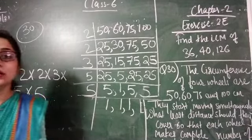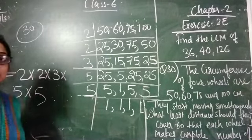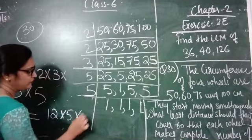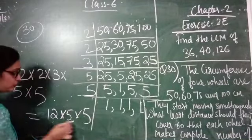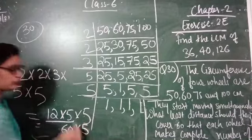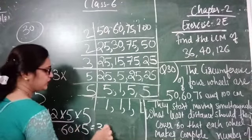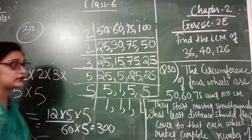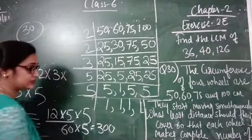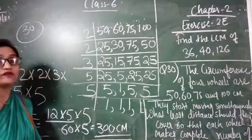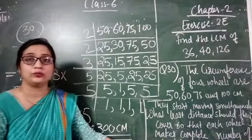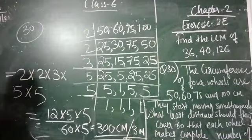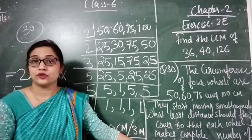So our next step is to multiply these prime numbers. 2 × 2 = 4, 4 × 3 = 12, 12 × 5 = 60, 60 × 5 = 300. The question is given in centimetres, so the answer is 300 centimetres. If we want to convert this to metres, we get 3 metres. So the LCM is 300 centimetres or 3 metres.